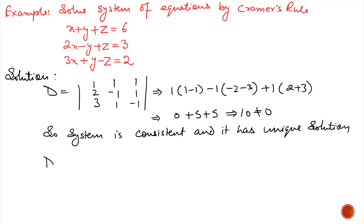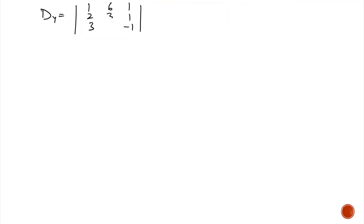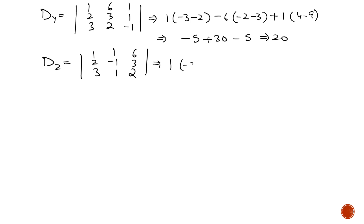Now we calculate Dx. In Dx we take coefficients of y and z but in place of coefficient of x we take the constants 6, 3 and 2. After calculation we get Dx = 10. For Dy we take coefficients of x and z but in place of coefficient of y we take constants 6, 3 and 2. After calculation we get −5 + 30 − 5, which equals Dy = 20. For Dz we take coefficients of x and y but in place of coefficient of z we take constants 6, 3 and 2. After calculation Dz = 30.